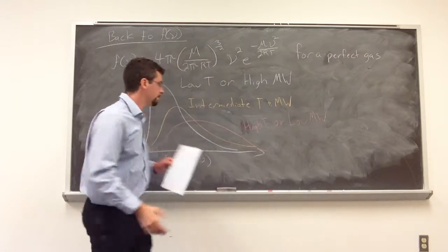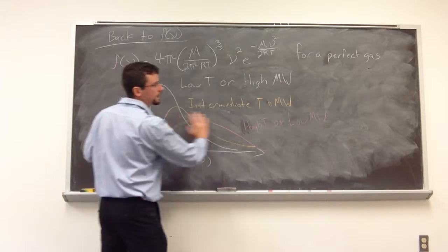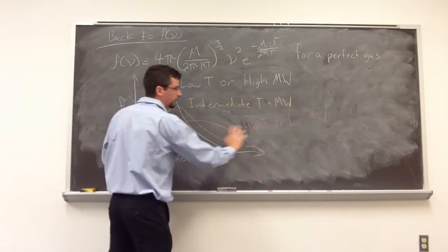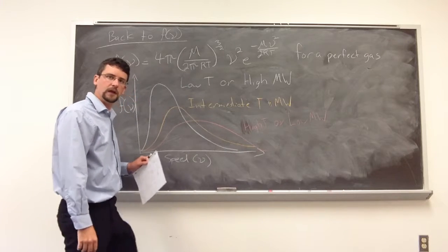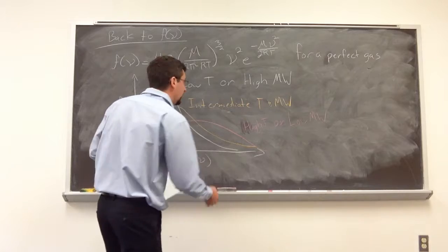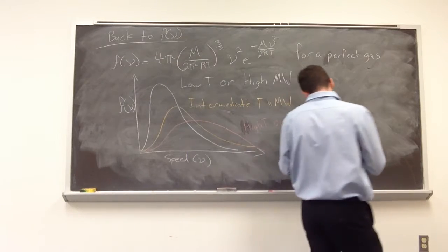So by increasing the temperature, what we can see is we're going to smear out that distribution. As we get smaller, we also smear out that distribution too. So those are things to consider when thinking about the speed.